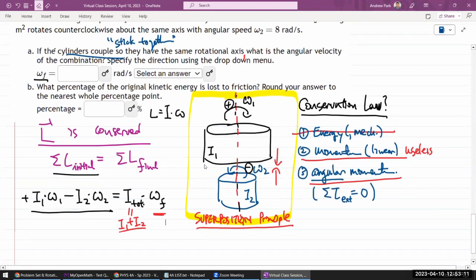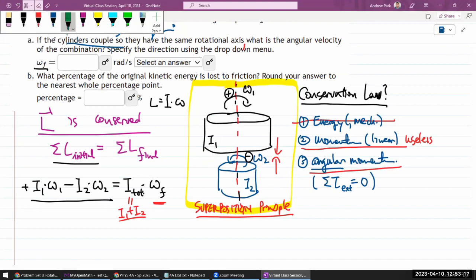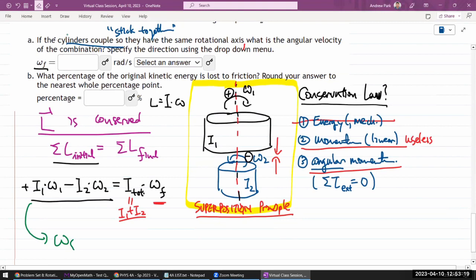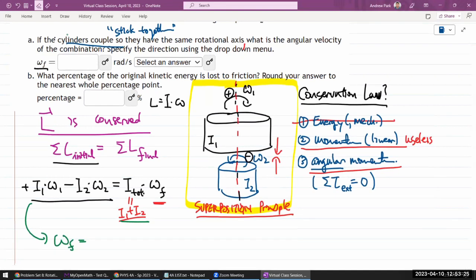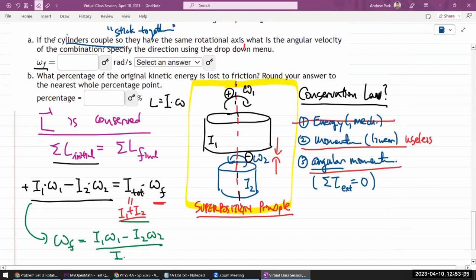Let's just do this quick algebra. My final angular velocity is equal to everything on the left-hand side divided by the total rotational inertia here. So I1 omega 1 minus I2 omega 2 divided by I1 plus I2. Good.